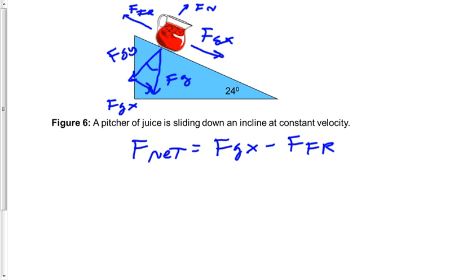Since we are traveling at constant velocity again, we know that the net force again has to be equal to zero because we would say mass times zero is equal to force gravity x minus force of friction.